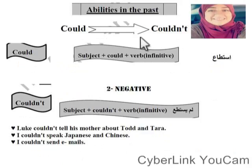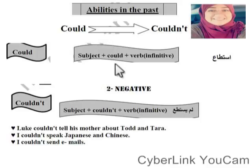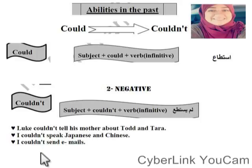Okay, we also have past ability using 'could' and 'couldn't'. These express ability but in the past. 'Could' means was able to do something in the past. 'Couldn't' is the negative. For example: 'I couldn't speak Japanese or Chinese.' 'I couldn't send an email.' So 'could' and 'couldn't' express past ability.